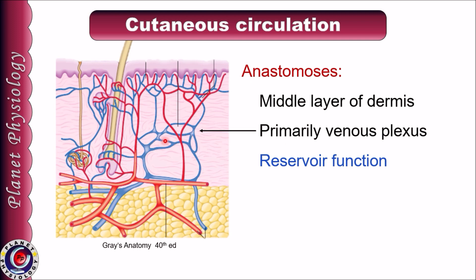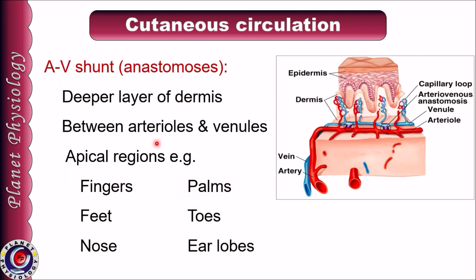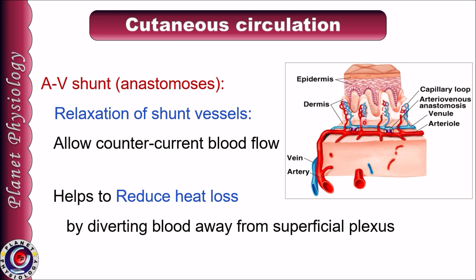The middle layer of the dermis mainly contains venous plexus, which acts as a blood reservoir. In the deeper layer of dermis, arteriovenous shunts are present. These connect arterioles to venules and are mainly present in the apical regions of the body — for example, fingers, palms, feet, toes, nose, and earlobes. When the shunt vessels are relaxed, they allow blood to flow directly from arterioles to venules, bypassing the capillaries, allowing counter-current flow in the blood vessels.